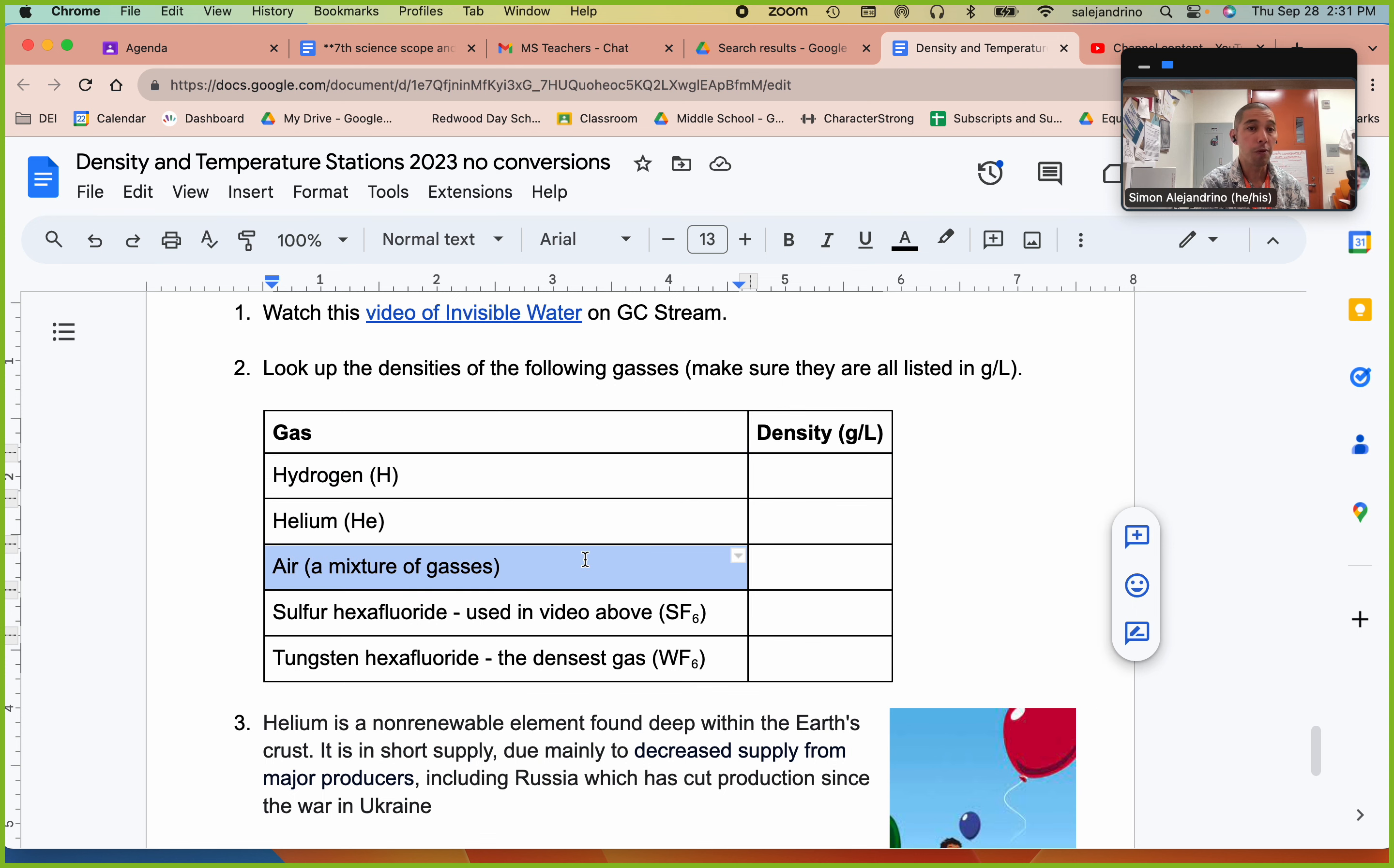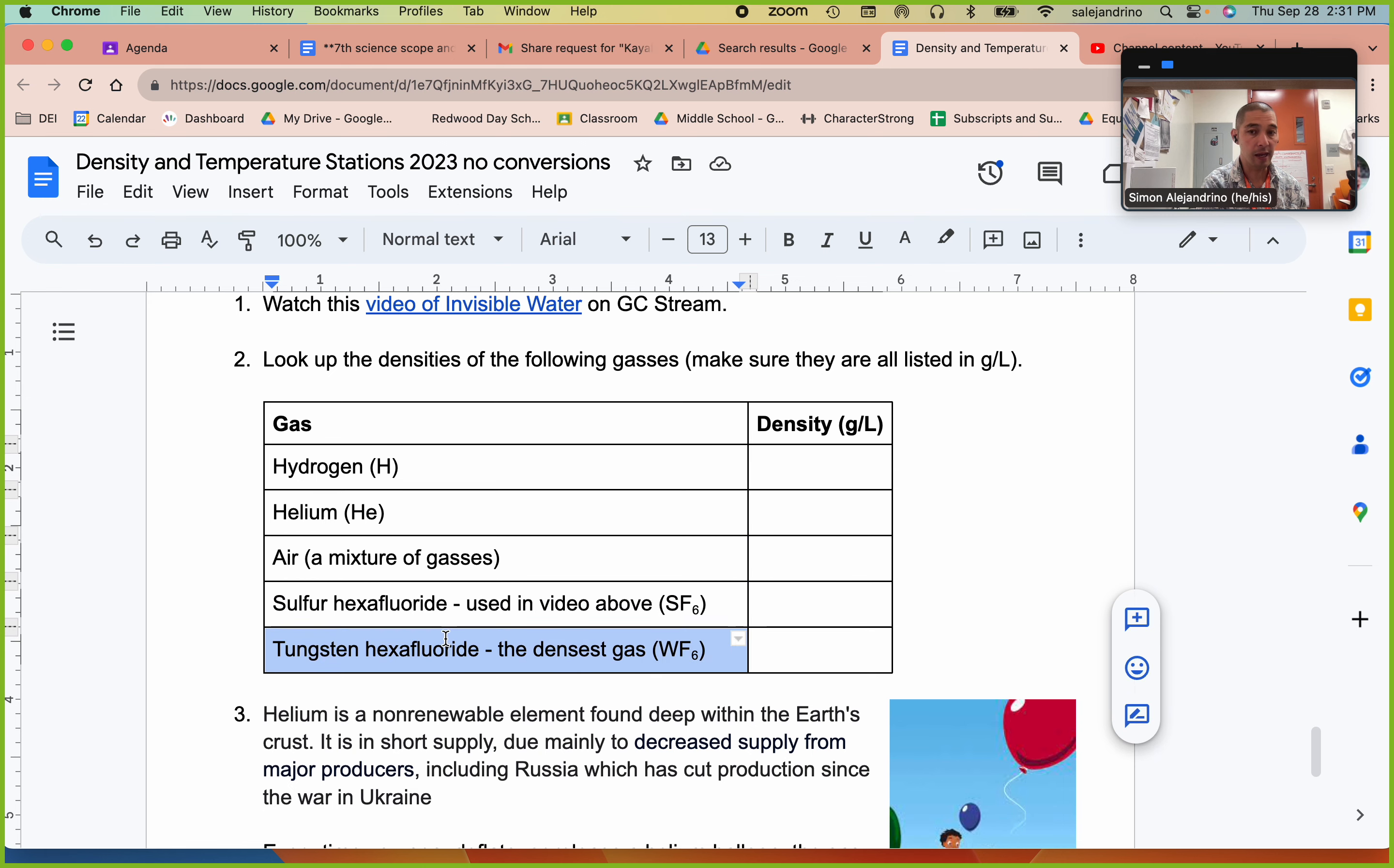So they're both less dense than air, which is why a balloon full of helium will float on top of air. They are both less dense, certainly than sulfur hexafluoride, which is used in the video, and tungsten hexafluoride, which is the densest gas.